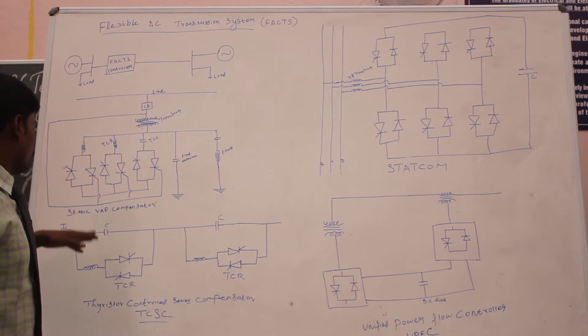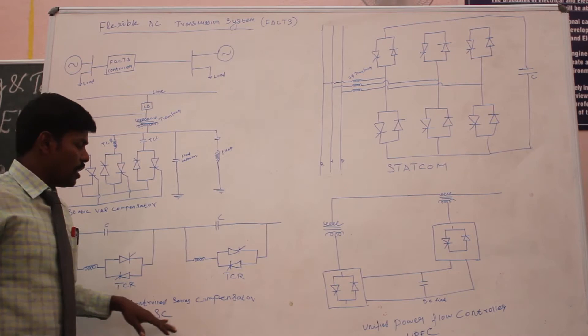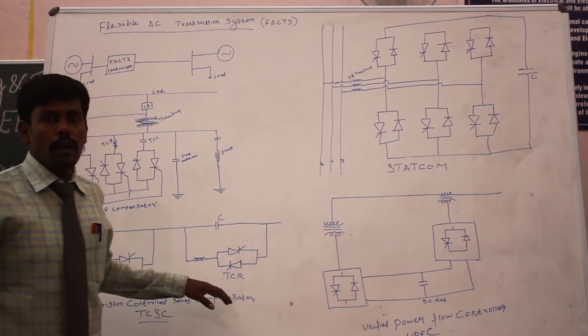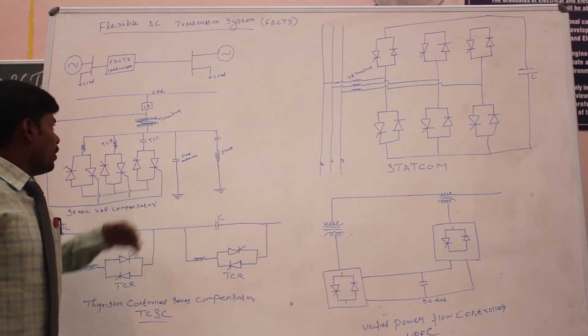First, you have to see the static power compensator. Second, the thyristor controlled series compensator. Third is the static control. Fourth is the UPFC, unified power flow controller. These FACTS control devices are used for regulating the voltage in a power system under a transient condition, having both shunt and series measures.